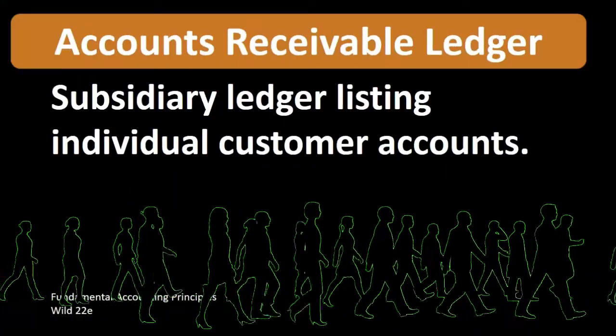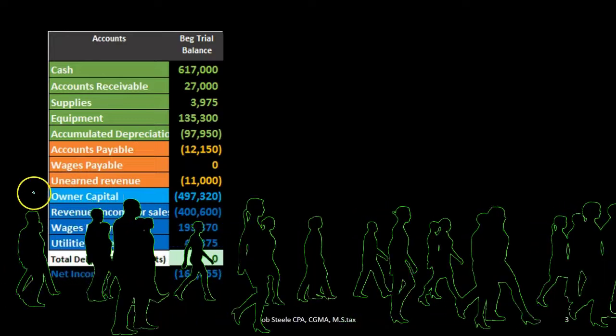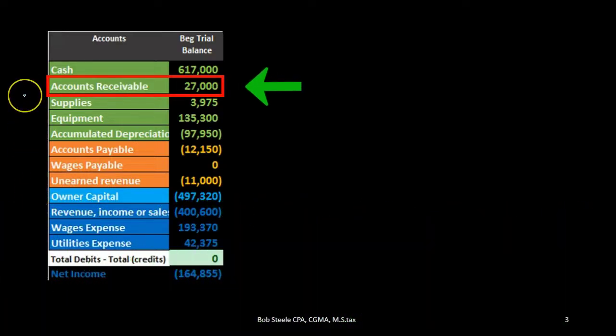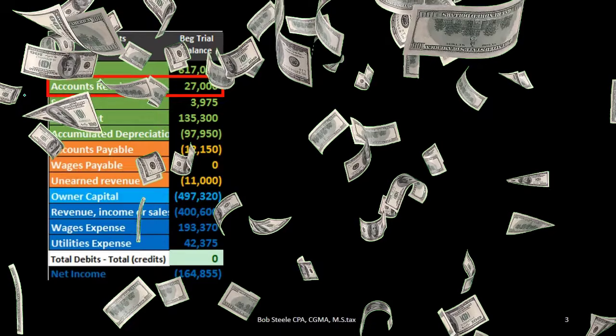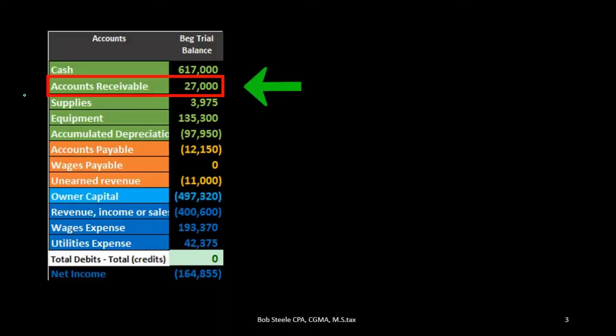In this case, we want to know who owes us money. For example, if we have the trial balance here, we might have the accounts receivable number representing money owed to us by customers. A boss might ask how much money is owed to us — we can look at the trial balance and say $27,000 is owed to us. The next question that will come is: who owes us money? When are they going to pay us? Have we called these individuals?